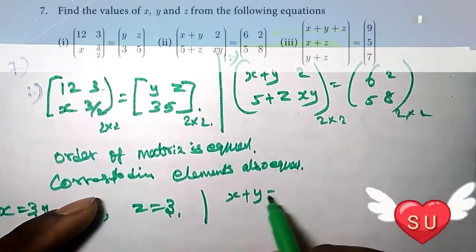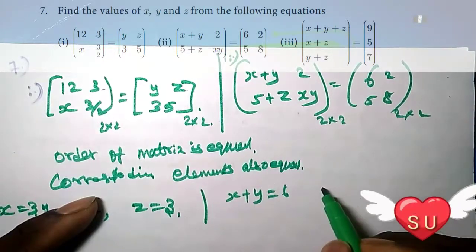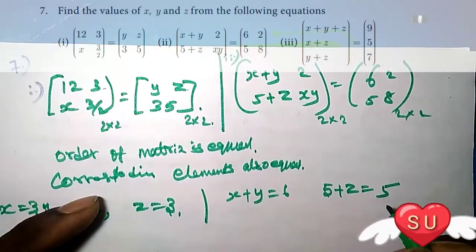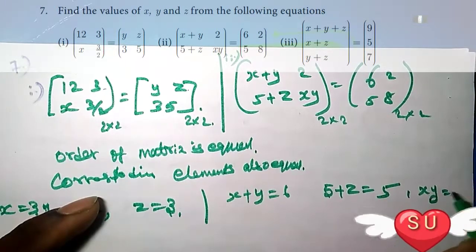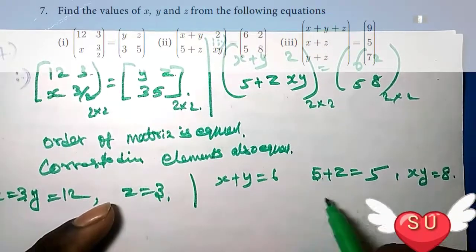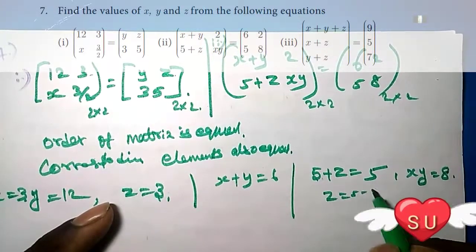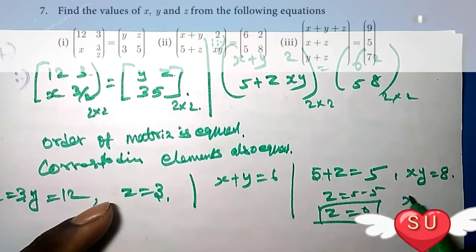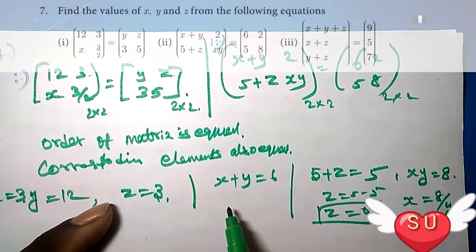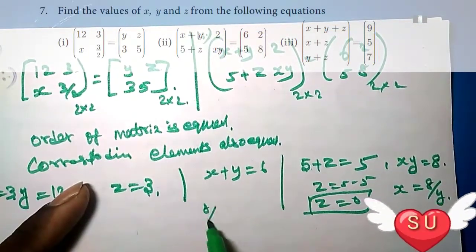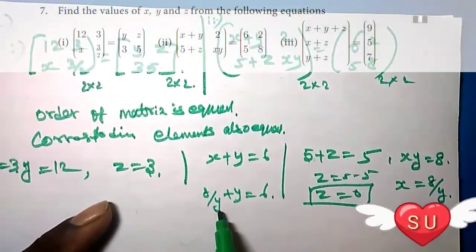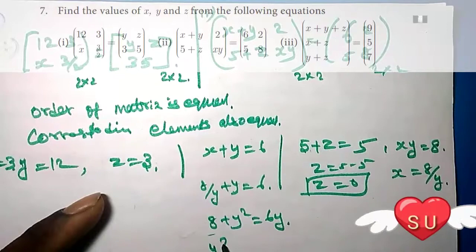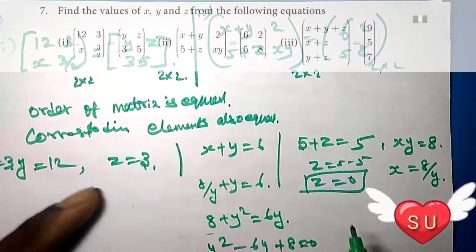Since the matrices are equal, corresponding elements are also equal. So x plus y equals 6. Next, 5 plus z equals 5, so z equals 0. Next, x times y equals 8. Since x equals 8 divided by y, substituting into x plus y equals 6 gives 8 divided by y plus y equals 6. Multiplying through by y gives y squared minus 6y plus 8 equals 0.